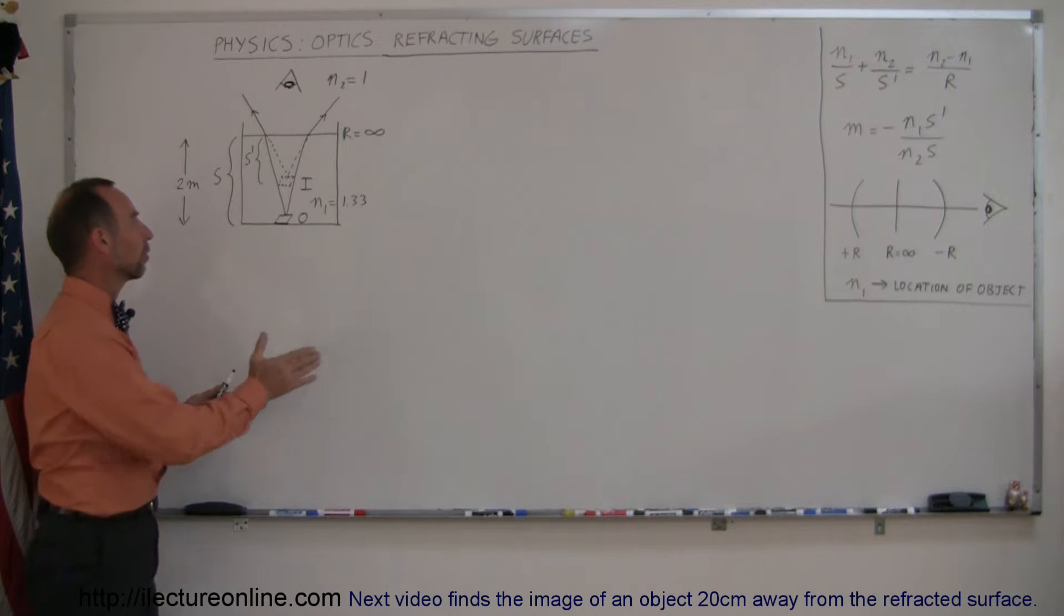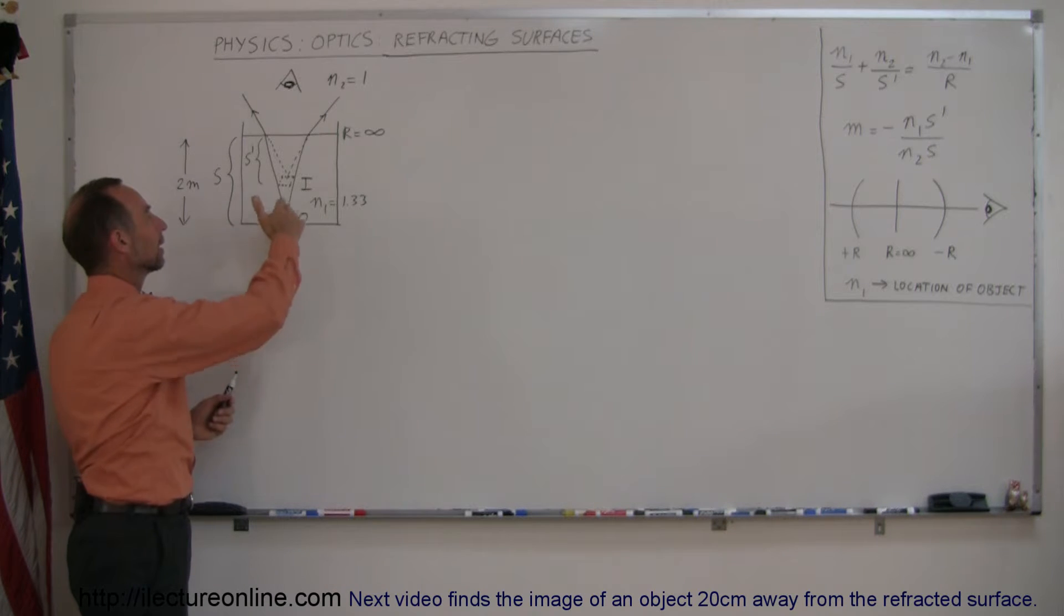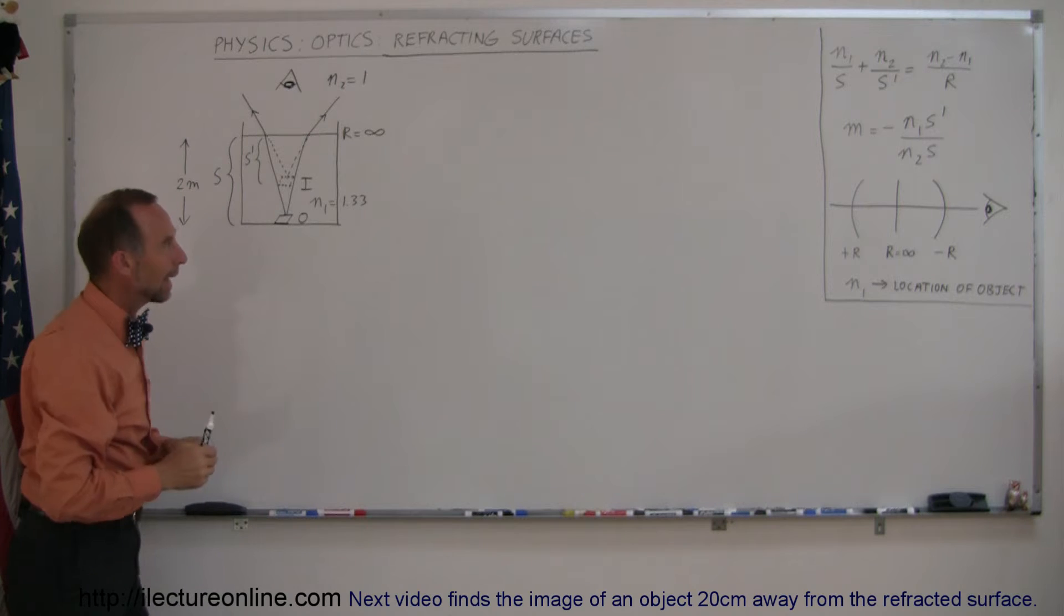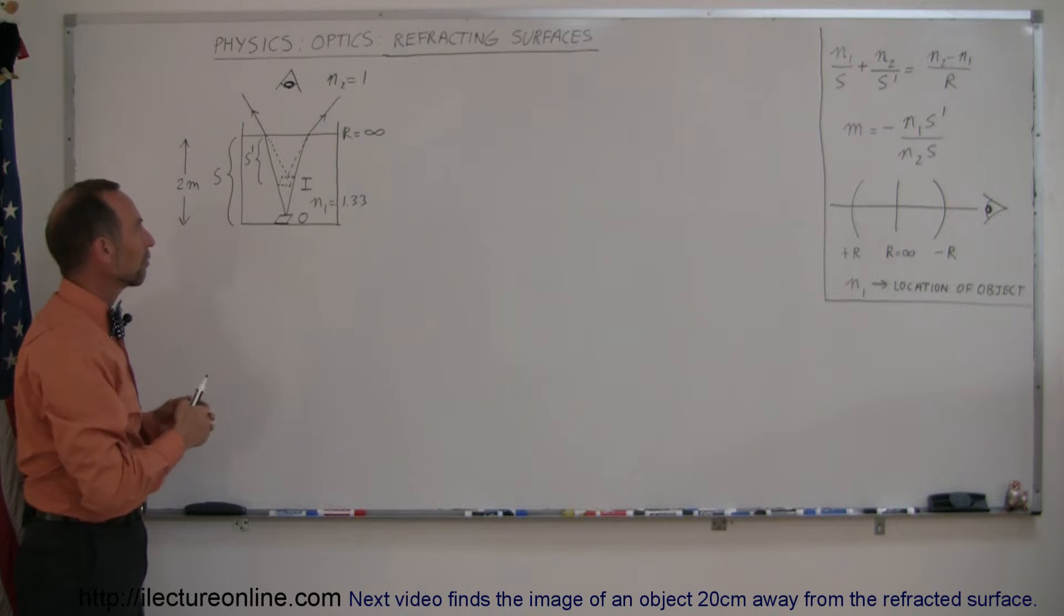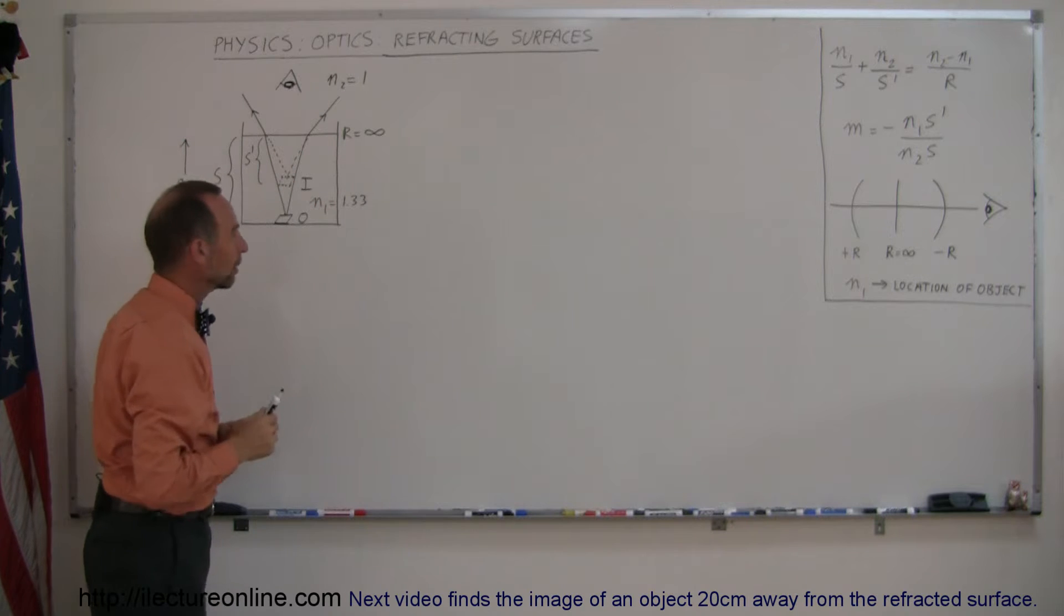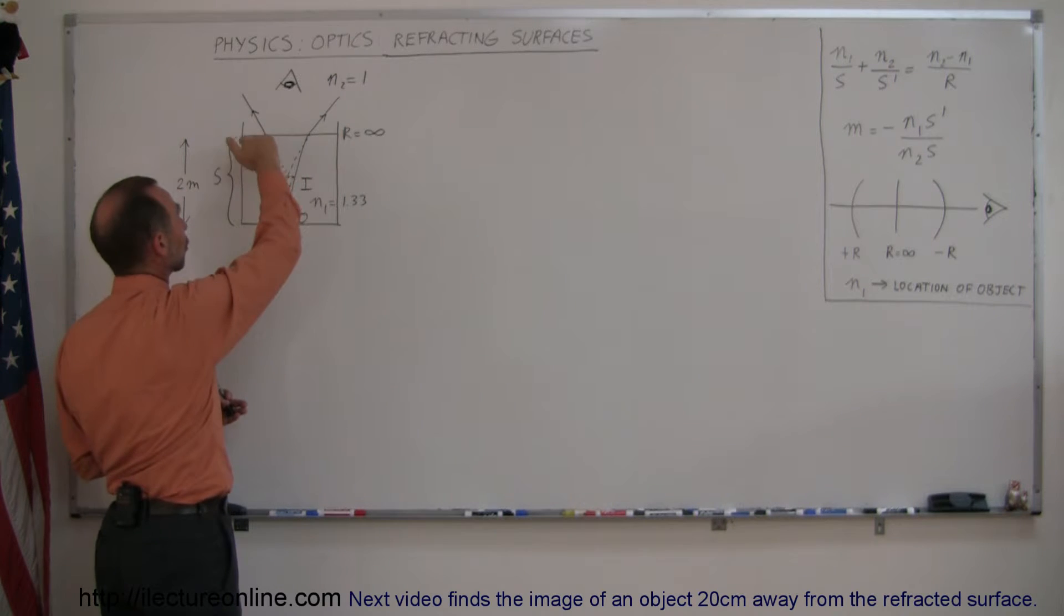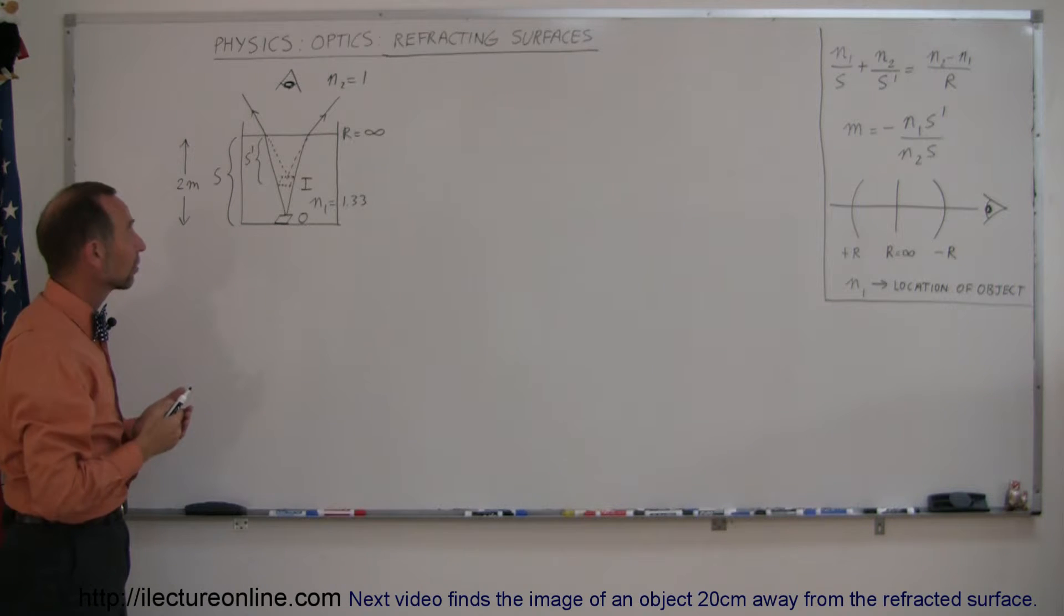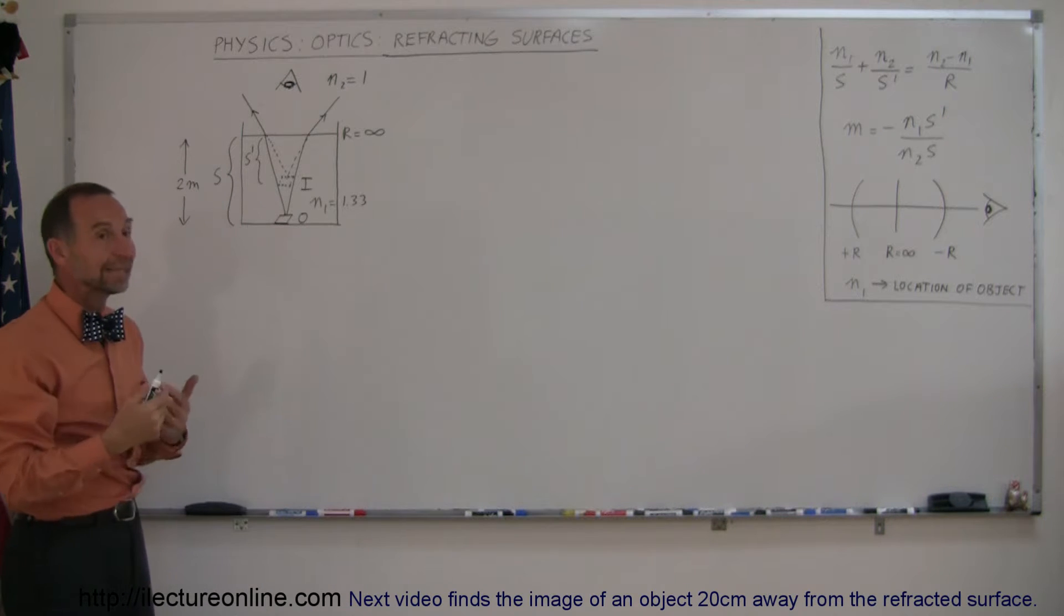This is where the object is on one side of a boundary, light bounces off the object, goes back across the boundary, and on the other side we have an observer. Depending upon the index of refractions of the mediums on both sides of the boundary and the curvature of the boundary, different things can happen and objects will cause images to occur in different locations.